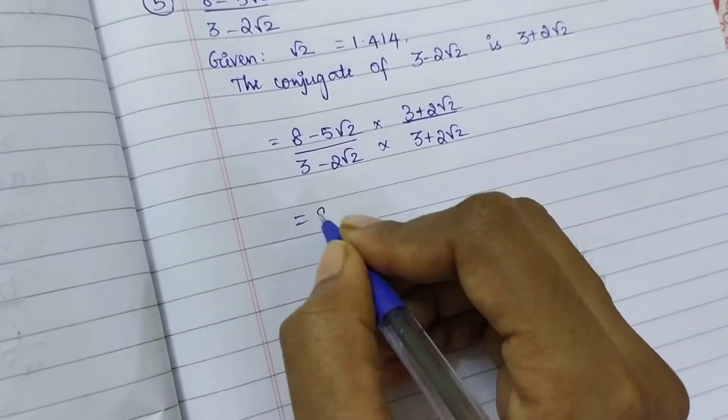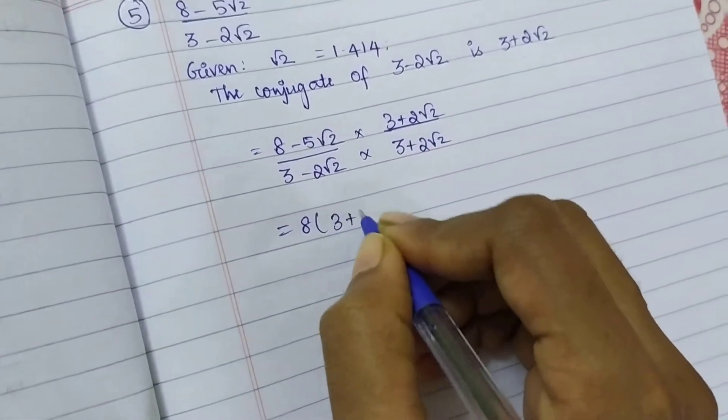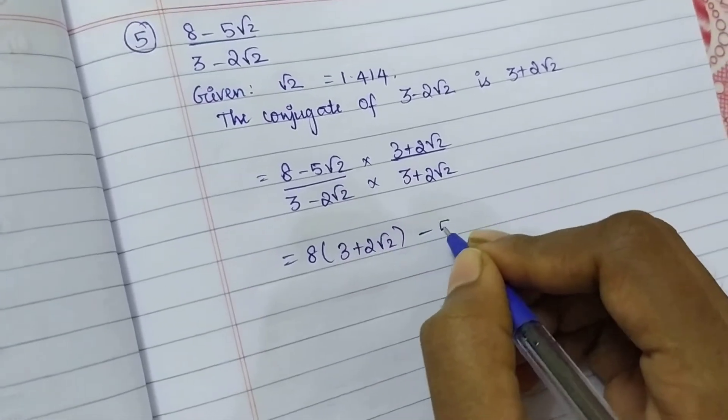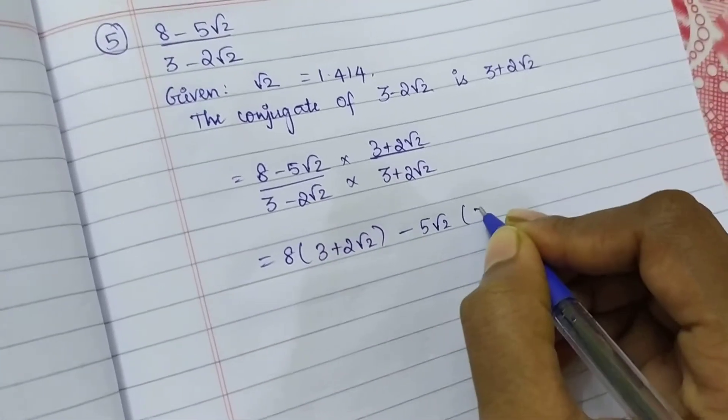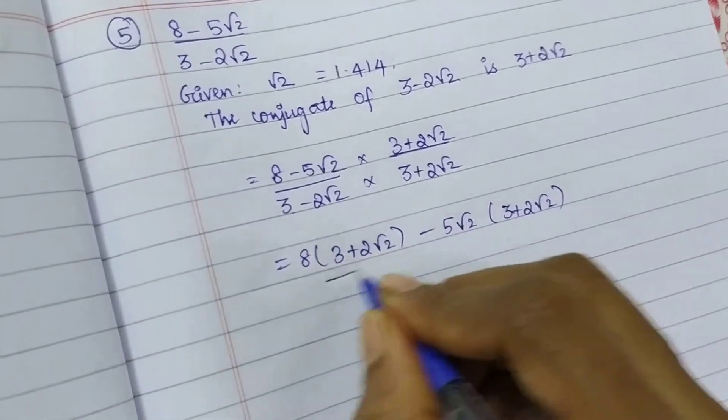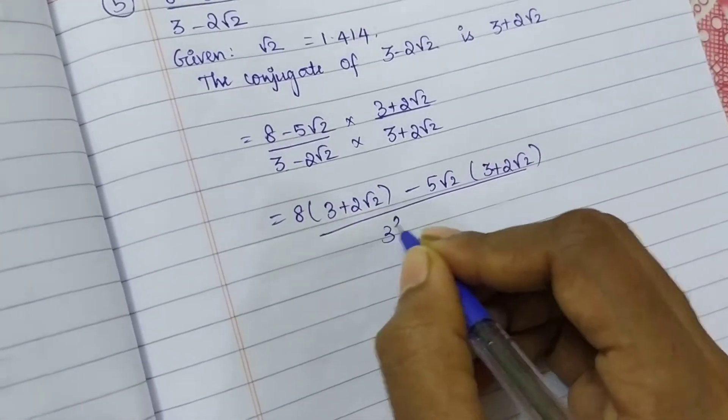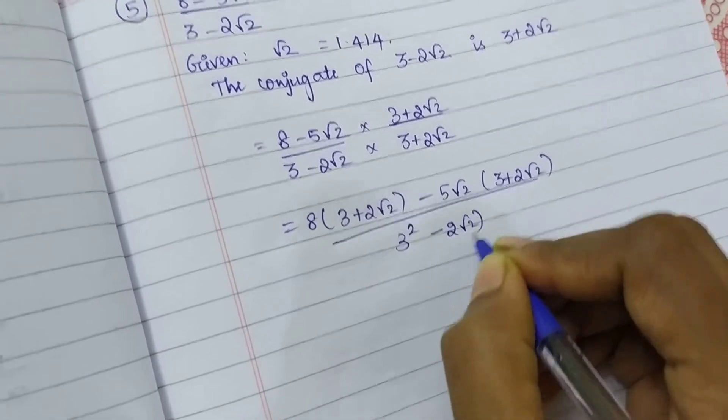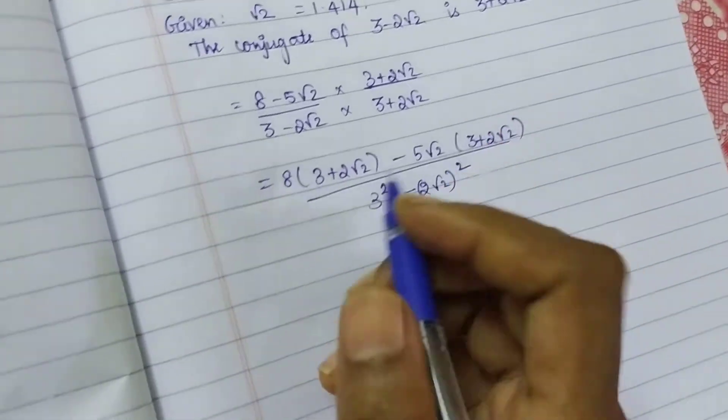So, 8 into 3 plus 2 root 2 minus 5 root 2 into 3 plus 2 root 2. So, a minus b into a plus b, a square minus b square.